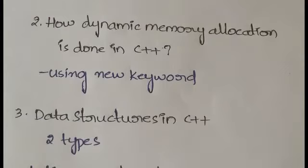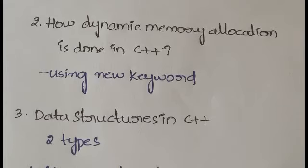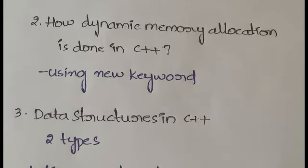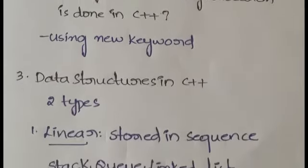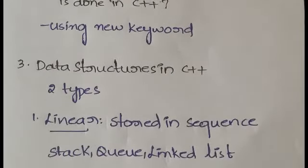The second question is: how is dynamic memory allocation done in C++? Memory allocation in C++ is done using the 'new' keyword. Whenever you're declaring a variable and allocating memory, you use the keyword 'new'. If asked about data structures in C++, you can say they are divided into two types: linear and non-linear.